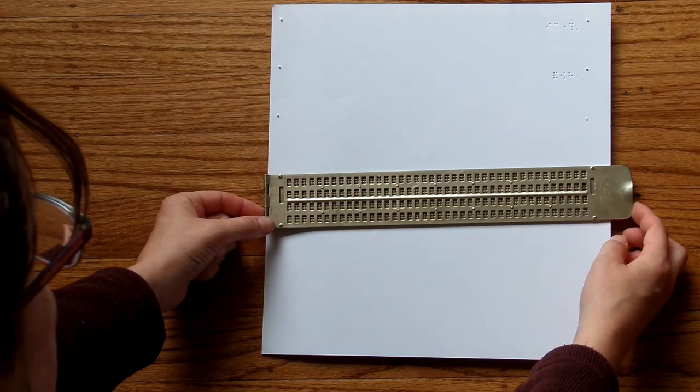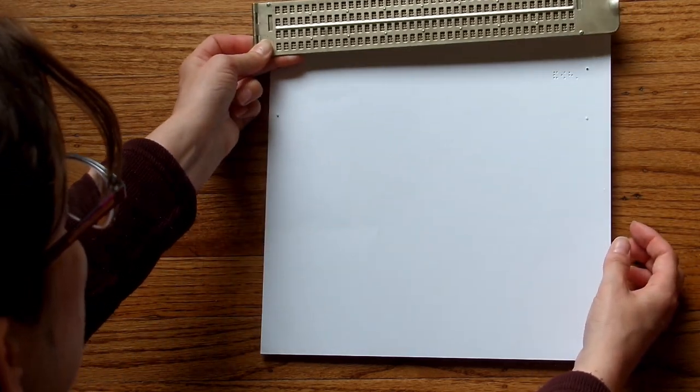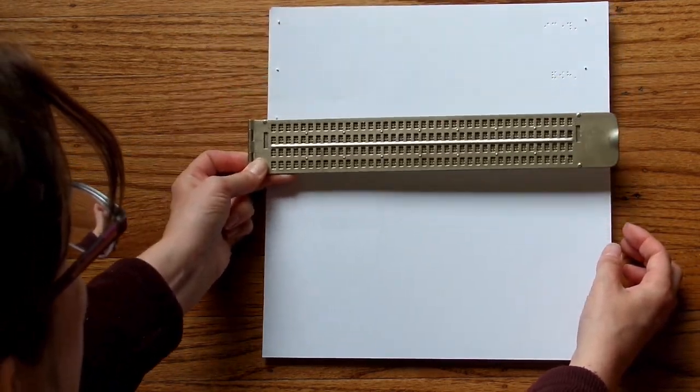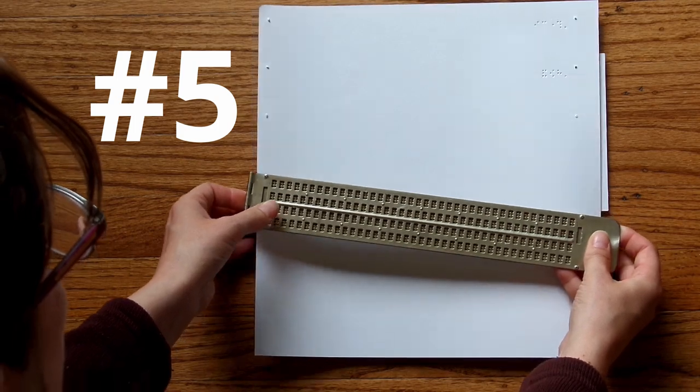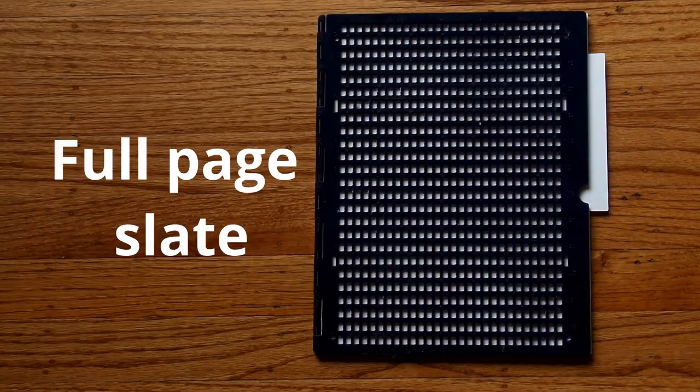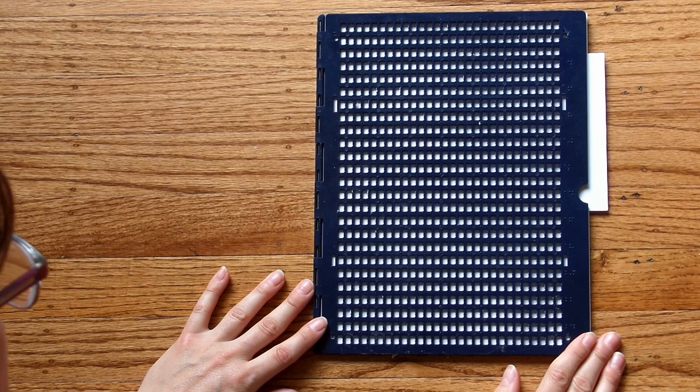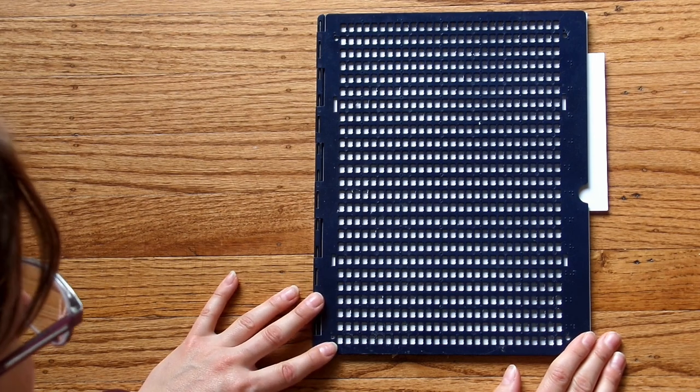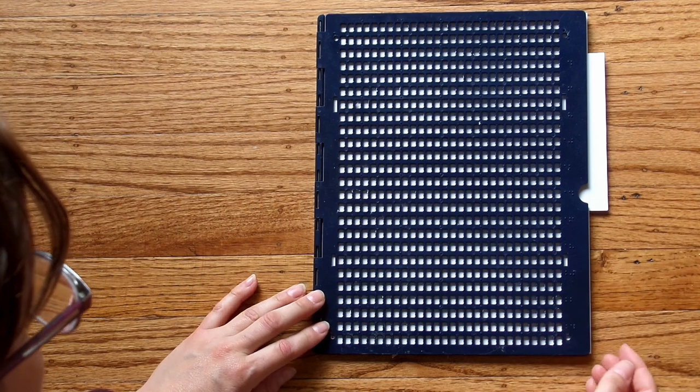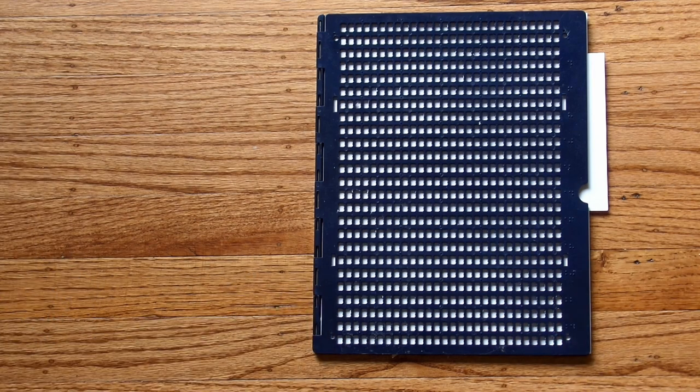So do you remember this metal pocket slate I was showing you, where you have to move it every four lines to move down the paper? So let me show you a full page slate, which makes this super enjoyable. This slate fits an eight and a half by eleven sheet of paper, but you can also get the ones that fit braille size paper. And you just pop the page in there, and then you can write your letter to your pen pal without having to move the slate down.